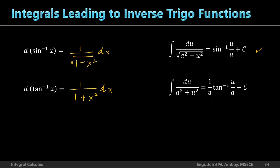The constant a appears as a coefficient 1/a and inside the inverse tangent as u/a. The key difference: the inverse sine formula has a square root with the constant term first (a² − u²), while the inverse tangent has no square root and is just a sum of squares (a² + u²).